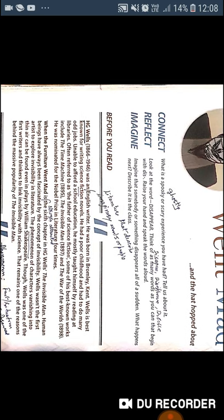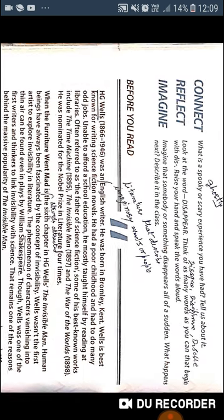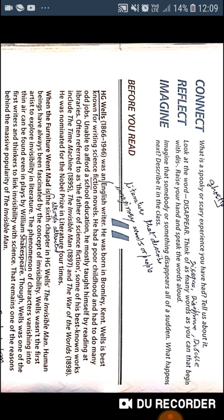Now, this chapter is about the writer H.G. Wells. Wells was an English writer; he was born in Bromley, Kent. Wells is best known for writing science fiction novels. Science fiction is literature that describes imaginary events or people which are not real — it is called fiction. He had a poor childhood and had to do many odd jobs. Unable to afford a school education, he mostly taught himself by reading in libraries. He is often referred to as the father of science fiction.